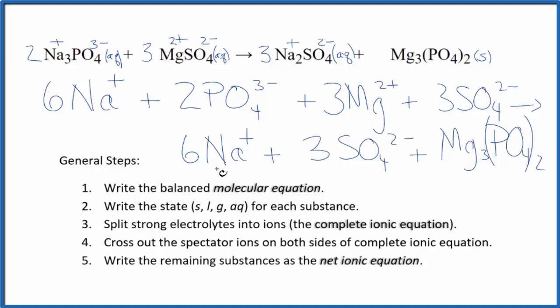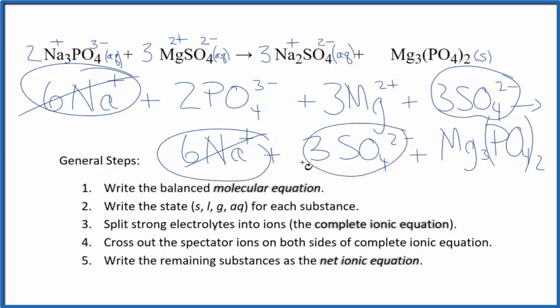So now that we have this, we can cross out the spectator ions. They're on both sides. I see I have 6 sodium in the reactants, and then 6 in the products. Get rid of that. 3 sulfates here, and then again in the products. Get rid of that.